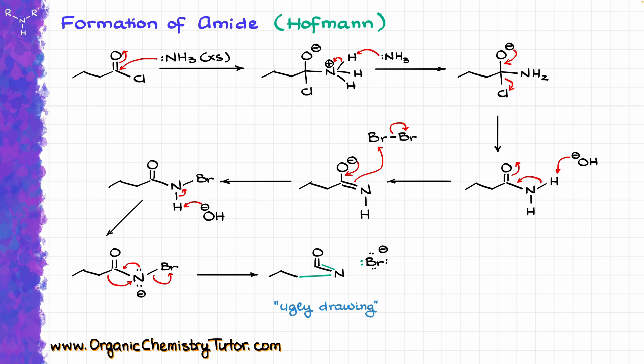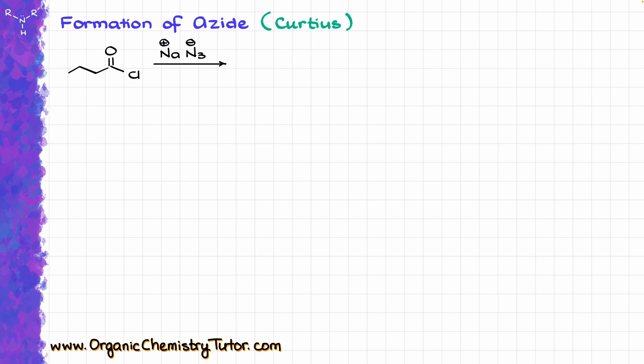Let me redraw that in a more presentable way with reasonable bond angles, giving us the structure of this isocyanate. Notice how the carbon that used to be part of my four-carbon chain has now been ripped off, with nitrogen between the rest of the chain and this carbon. This carbon is what we are going to end up losing during the hydrolysis.